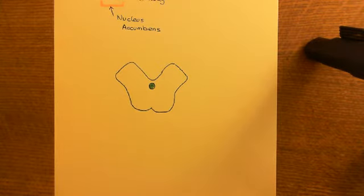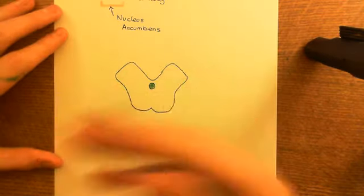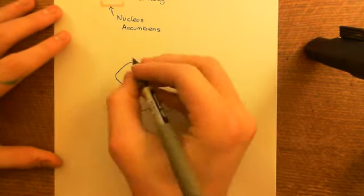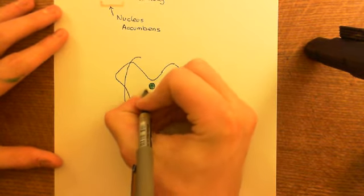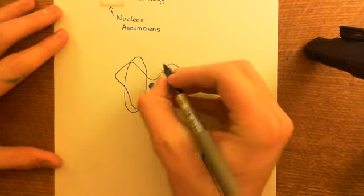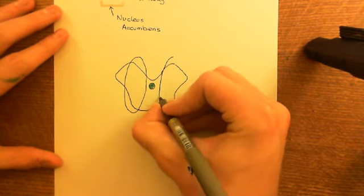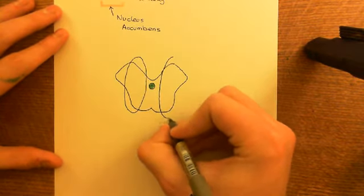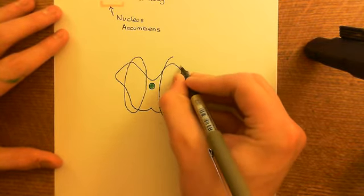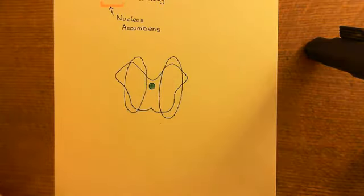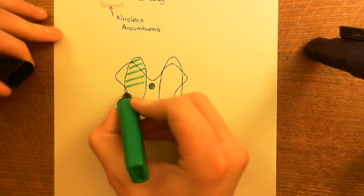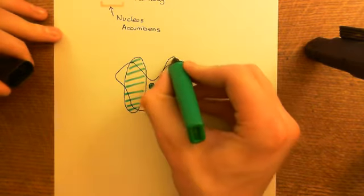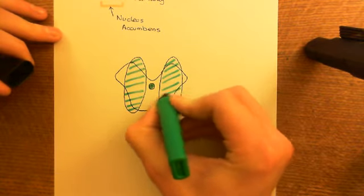Now I'm going to show the thalamus sitting on top of the midbrain — a picture we haven't drawn before. This illustrates that you have a left thalamus and a right thalamus. Perched on top of the left side of the midbrain is the left thalamus, which is truly this egg-shaped structure. And sitting on top of the right side is the right thalamus. Let's colour these two in turquoise.